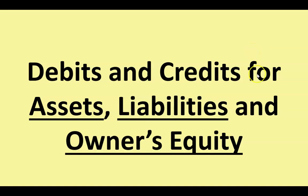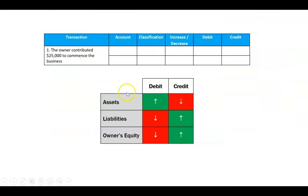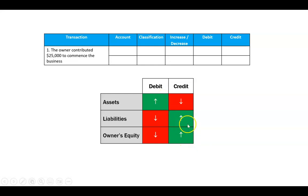Let's look at how we would apply debits and credits for assets, liabilities, and owner's equities. Assets will be debits, liabilities will be credits, and owner's equity will be credits. The reason for that is assets must always equal liabilities plus owner's equity, so that's why these two should equal that one.